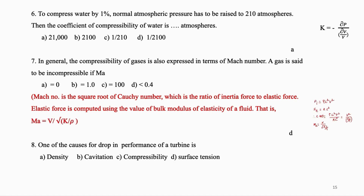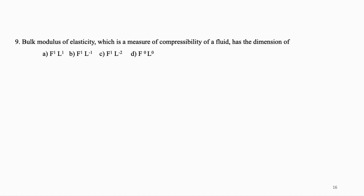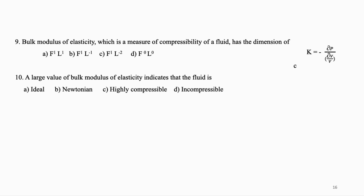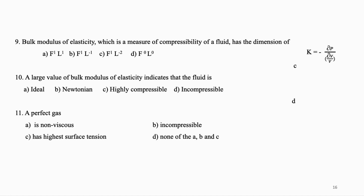One cause for drop in performance of a turbine: (A) density, (B) cavitation, (C) compressibility, (D) surface tension. Answer is B. Bulk modulus of elasticity, a measure of compressibility, has dimensions: (A) F¹L¹, (B) F¹L⁻¹, (C) F¹L⁻², (D) F⁰L⁰. Answer is C. A large value of bulk modulus indicates the fluid is: (A) ideal, (B) Newtonian, (C) highly compressible, (D) incompressible. Answer is D. A perfect gas is: (A) non-viscous, (B) incompressible, (C) has highest surface tension, (D) none of A, B, and C. Answer is D.